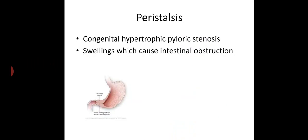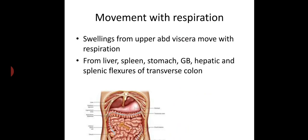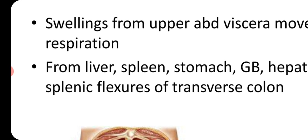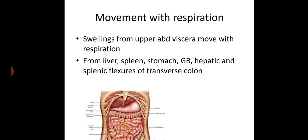Next, look for peristalsis, as in congenital hypertrophic pyloric stenosis or any swellings causing intestinal obstruction. Next, movement with respiration — swellings from upper abdominal viscera move with respiration, such as swellings arising from liver, spleen, stomach, gallbladder, and hepatic and splenic flexures of the transverse colon.